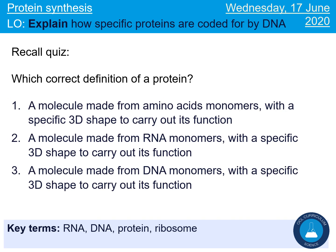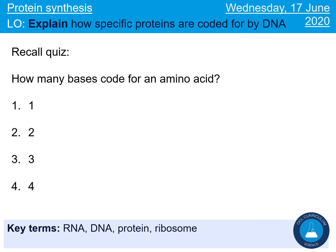Next question — pause the video and restart when you've got your answer. We should have got number one. Next question — pause the video and restart when you've chosen your answer. We should have said number three. Remember, we can also call that a triplet or a codon, and you do need to know those two words.